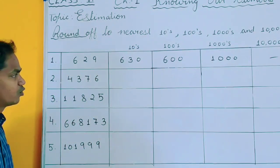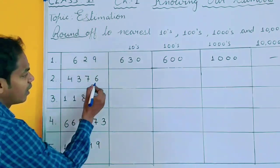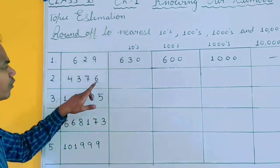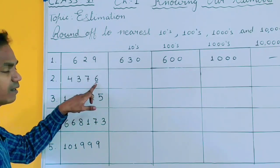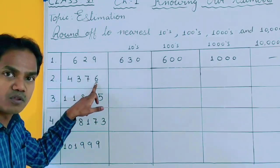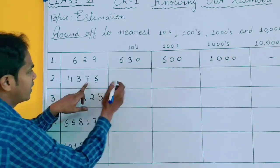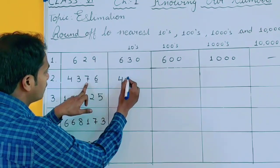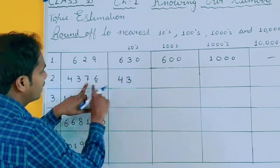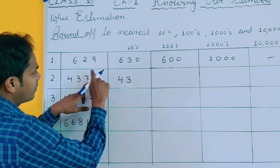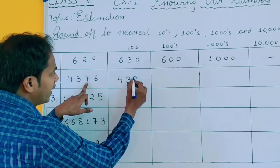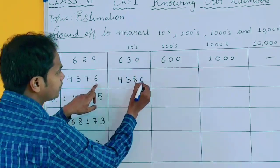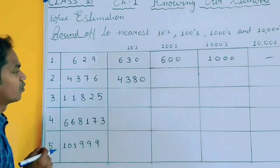Now come to question number 2. For rounding off to 10, the unit digit is more than 5, so you will do plus 1 here. This 7 will become 8, and the value you are checking will become 0.